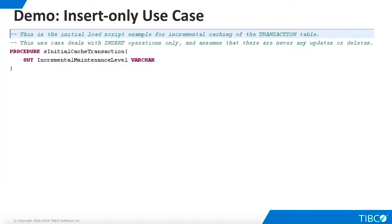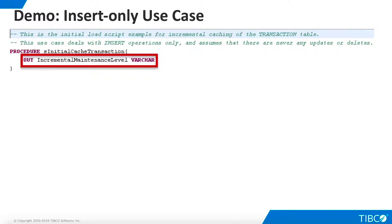Let's examine the initialize script. Remember, our first use case only cares about inserts to the data source. All incremental cache refresh procedures return a single output, which is the incremental maintenance level that will be stored in the cache status table. We have designed this use case so that the highest transaction ID is used as the incremental maintenance level.